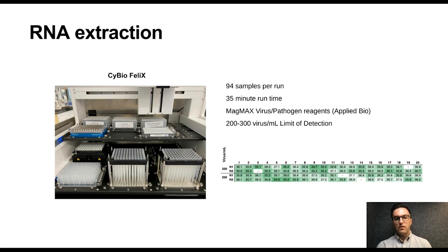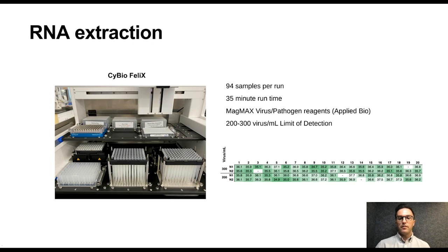For RNA extraction, we custom-designed our protocol and run 94 samples per run with two control wells, with about a 35-minute runtime on the Felix — a 96-well liquid handler. We use an off-the-shelf reagent set called MagMax, which many labs use, though we've been developing a homebrew reagent mix with very promising results that appear more efficient and much cheaper.